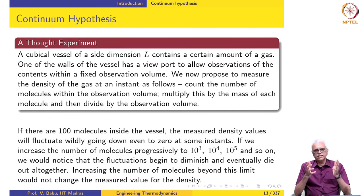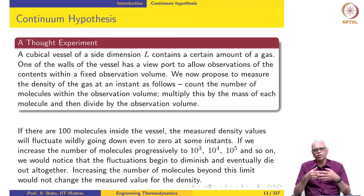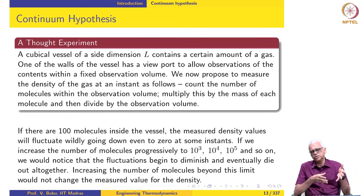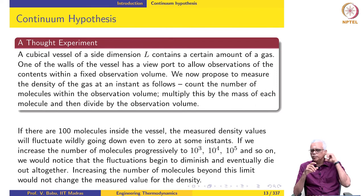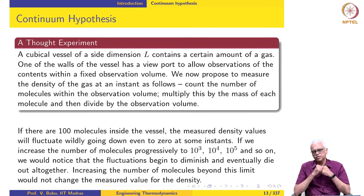If we start with 100 molecules inside the vessel, the measured density values will fluctuate quite a bit, sometimes even going down to zero — we may have no molecule at all in our observation volume at some instant, and at other instants we may have 5, 6, or 10 molecules. The density value we calculate will vary wildly from zero to some changing value, so we do not know the density unambiguously. If we have another observation port and measure density there, the value at that instant will differ from the value at the first port. So values not only vary with time at a given location, they also vary across observation volumes when there are only 100 molecules.